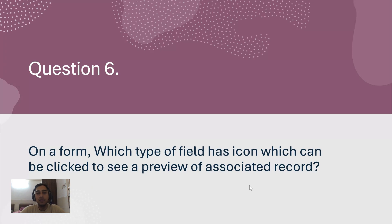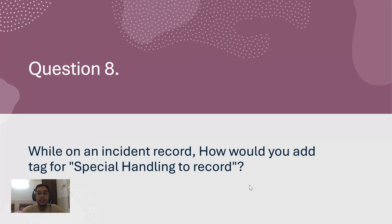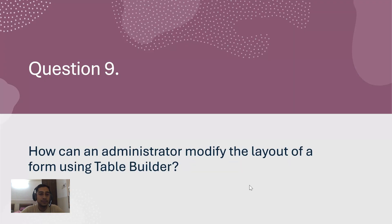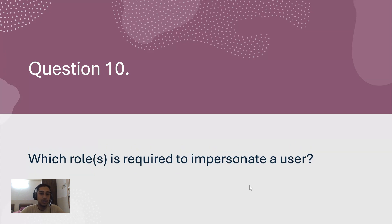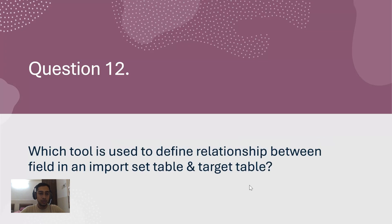Question 6: On a form, which type of field has an icon which can be clicked to see a preview of the associated record? Question 7: What are examples of UI actions relating to a list? Question 8: While on an incident record, how would you add a tag for special handling to the record? Question 9: How can an administrator modify the layout of a form using Table Builder? Question 10: Which role is required to impersonate a user? Question 11: Which feature helps automatically allocate a critical high-priority to the appropriate assignment group or team member?